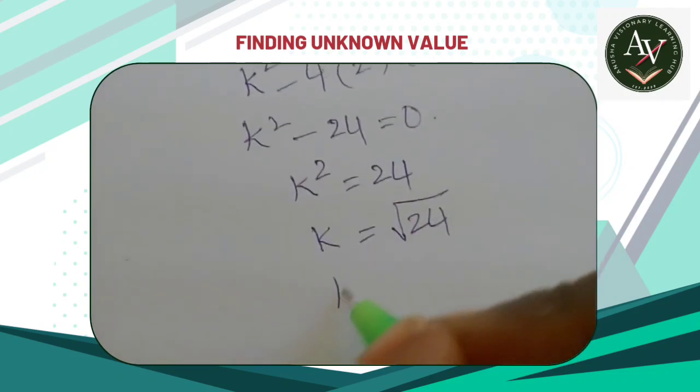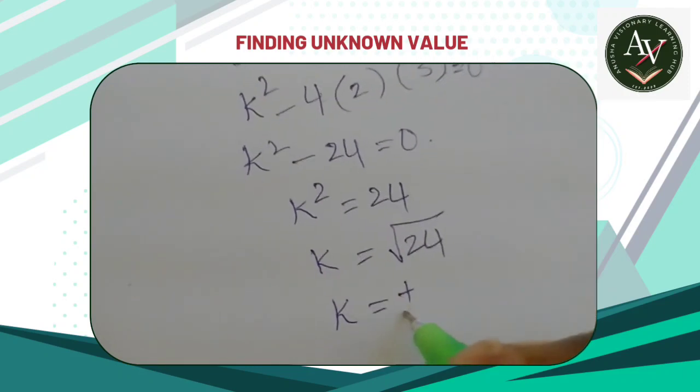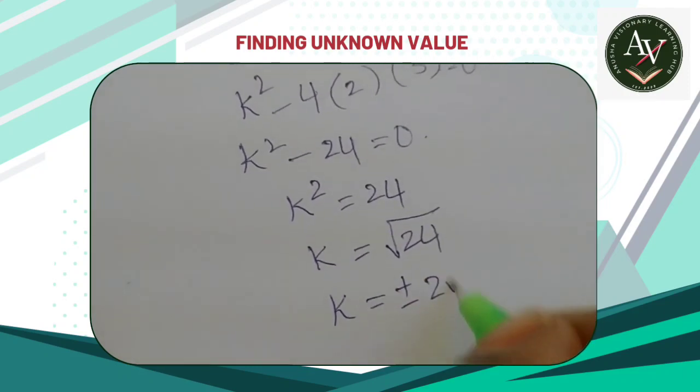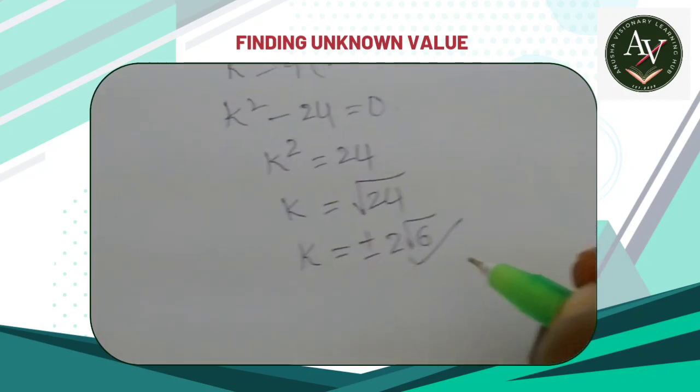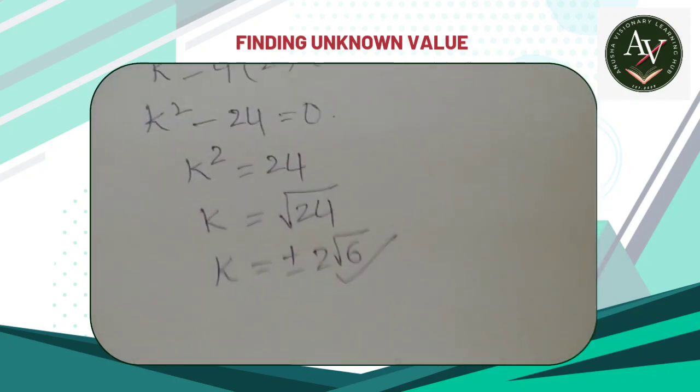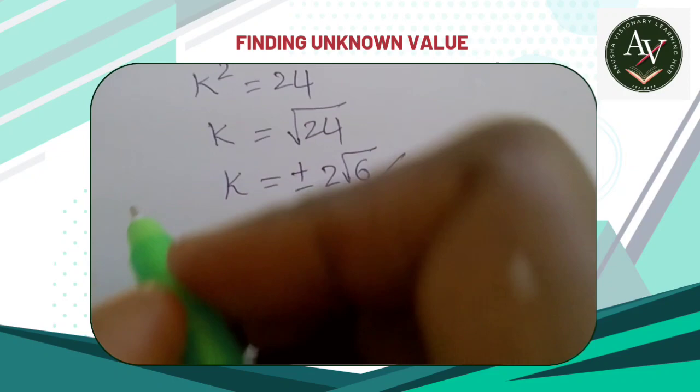Now we can write it as k is equal to plus or minus 2 root 6. This is the value of k if the given roots are equal. Let's see one more example.